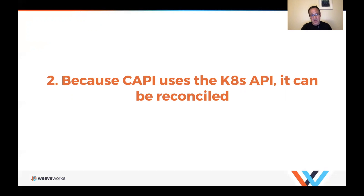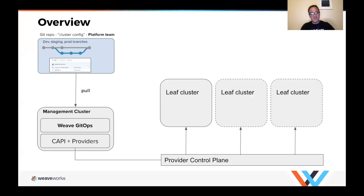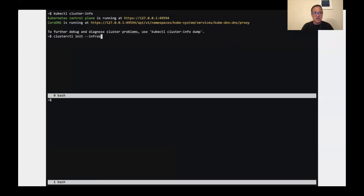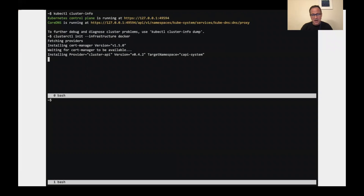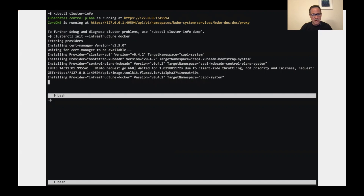We can use Argo CD, Flux, or a project called WeGo (GitOps) that builds on top of CNCF Flux. I'm going to do a quick demo. What I'm going to do is deploy a GitOps runtime with WeGo and CAPI into a simple kind cluster running locally on my machine, sync it up to a Git repository, add some YAML into that repository, and see it reconcile and create a new cluster. I've already got a kind cluster created. Now I'm going to install CAPI into this cluster using the tool clusterctl, which is part of the CAPI project. This is slightly sped up — it takes a little longer to install and get cert-manager running.